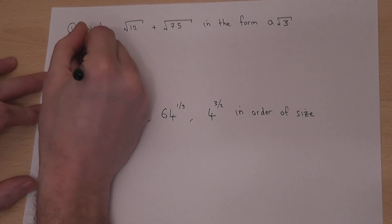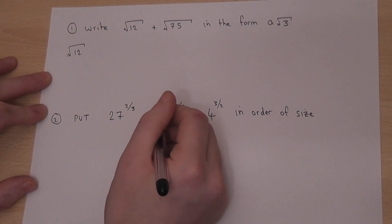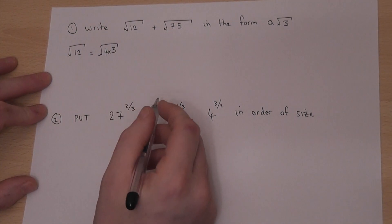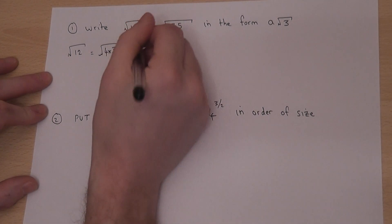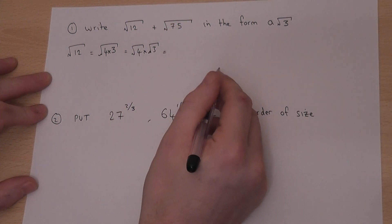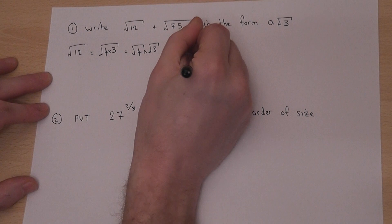Now root 12, we look for a square factor of 12, the highest square factor possible. Now 12 is 4 lots of 3, where 4 is a square number. So we can therefore break this up into root of 4 times root of 3. And root of 4 is 2, so this is 2 root 3.